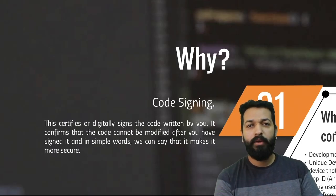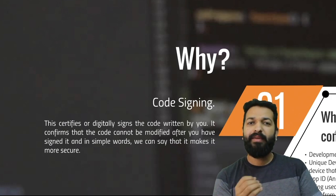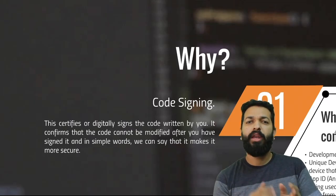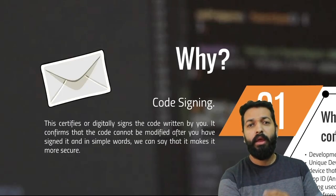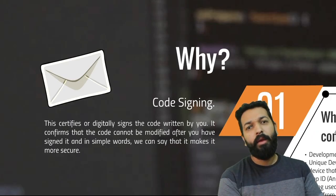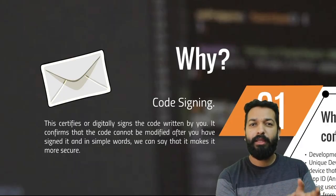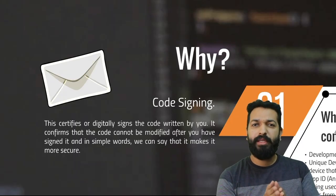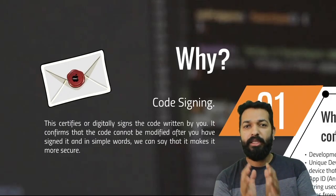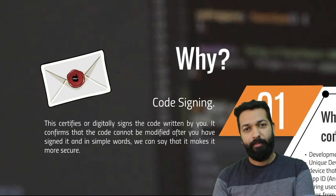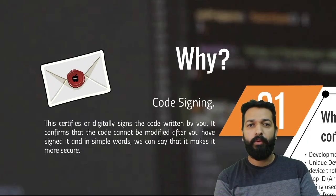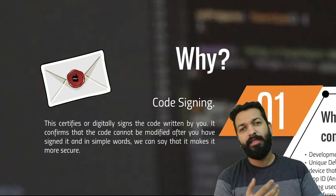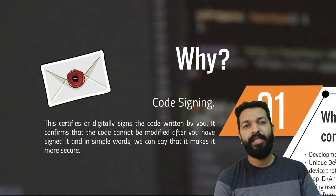Code signing is the digital signing of your code. Whatever source code you have written for your application, code signing gives us confirmation that after this point your code cannot be modified — in other words, it makes it more secure. Assume you want to send some sensitive information to your friend. You put it in an envelope and courier it. To ensure its security, you stamp and sign the envelope, so whenever it is received by the other party, the unbroken seal confirms the information has not been compromised. The same thing is done by code signing — your source code is digitally signed to make it more secure, and this is done using provisioning profiles and certificates.